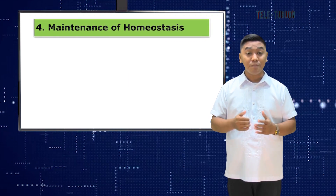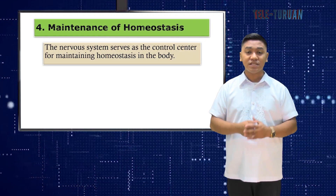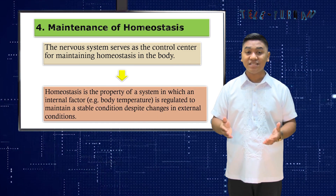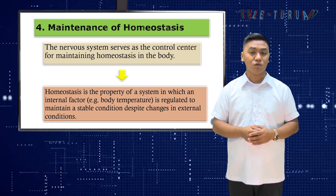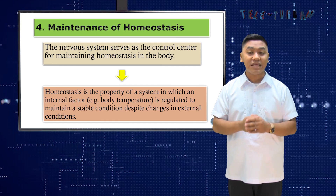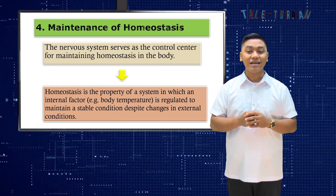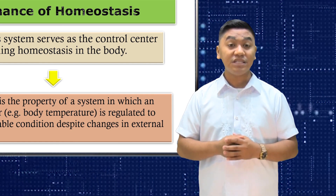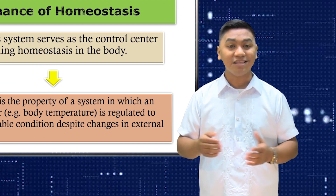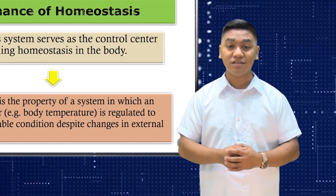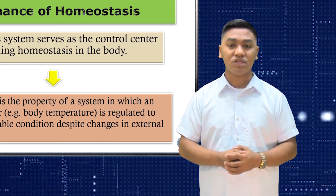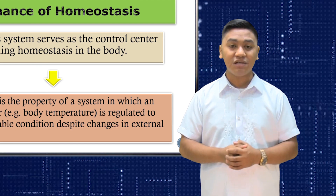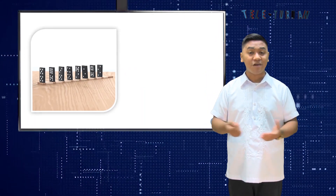And lastly, we have the maintenance of homeostasis. The nervous system serves as the control center for maintaining homeostasis in the body. Homeostasis is the property of a system in which an internal factor such as body temperature is regulated to maintain a stable condition despite changes in external conditions. If there are disruptions of the internal factor, the nervous system sends out signals to other systems to correct the disruption. For instance, it sends signals to the endocrine system which secretes hormones to regulate body functions.